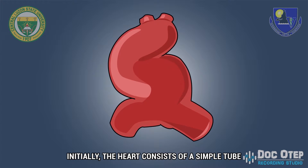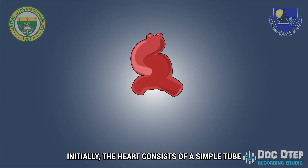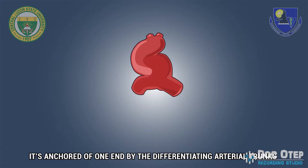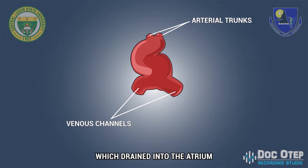Initially, the heart consists of a simple tube. It's anchored at one end by the differentiating arterial trunks, and at the other, the extensive venous channels which drain into the atrium.